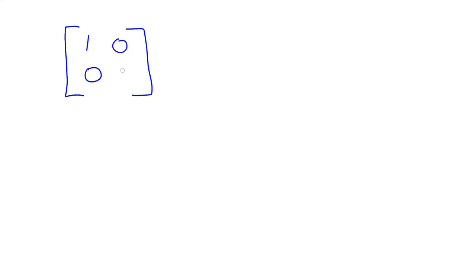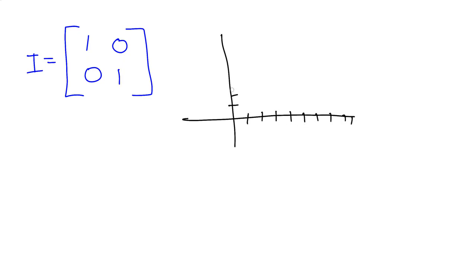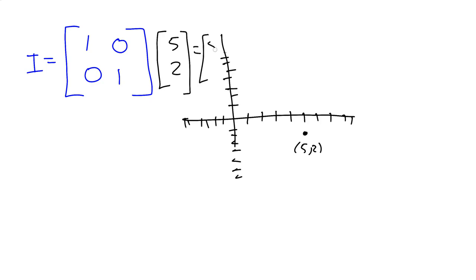Let's take the identity matrix — one zero / zero one — which we sometimes write as I. Thinking about what this does to points in a plane: take the point (5, -2). Multiplying by the identity gives back (5, -2), because the dot products just return the original entries. That's why it's called the identity matrix — the input is identical to the output. Every point maps to itself.